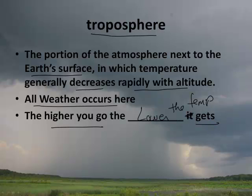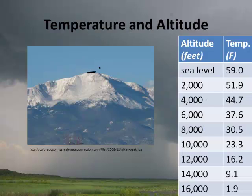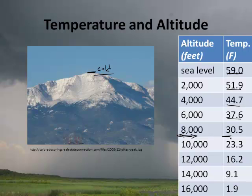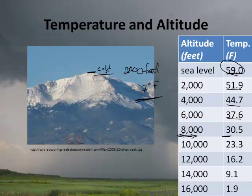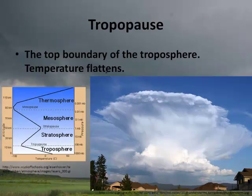Those of us who live in Woodland Park know this well — here's Pikes Peak, and if you've been to the top it's cold up there. At sea level at 59°F, if you go to 2,000 feet it's about 51°F. We live at 8,500 feet, so we'd be down around the low 20s Fahrenheit. The rule of thumb is roughly a 7°F change per 2,000 feet — which is why driving down to Colorado Springs, about 2,000 feet lower, you gain about 7 degrees.